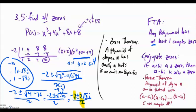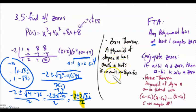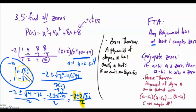Two of the three zeros are complex imaginary numbers, which ties back to the graph only crossing the x-axis at one spot. This still matches the Zeros Theorem — a polynomial of degree 3 has exactly 3 roots, counting multiplicities. The three zeros are -2, -1 + √3i, and -1 - √3i.